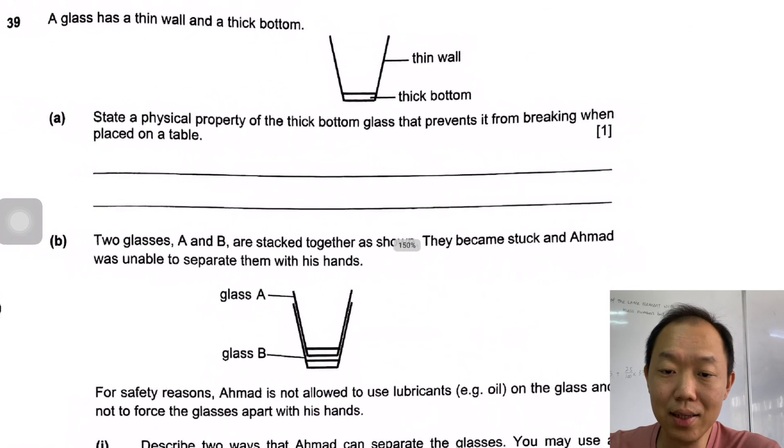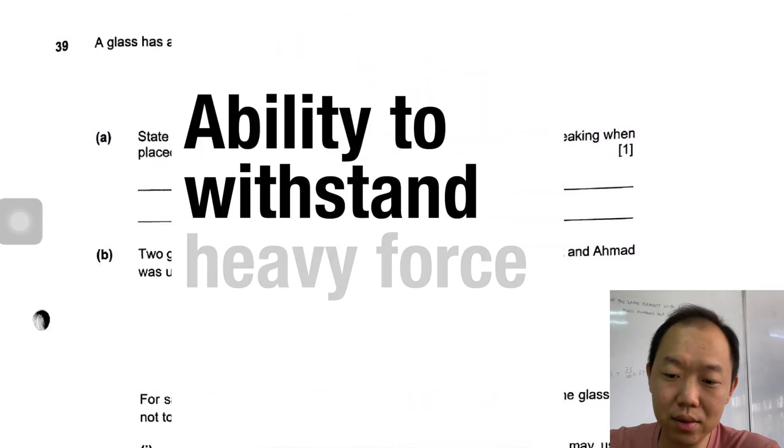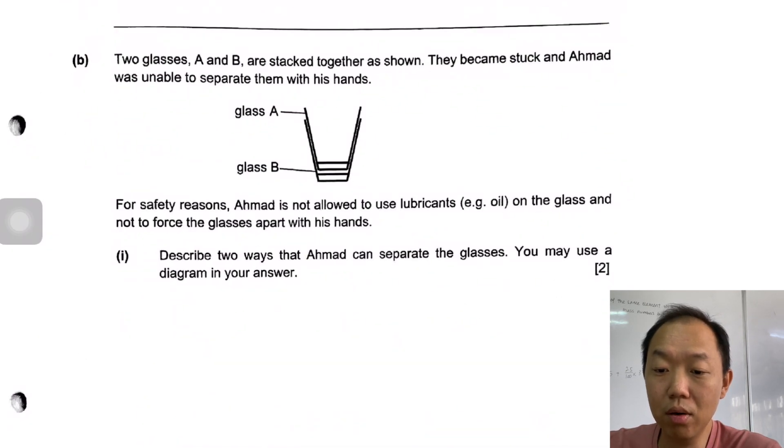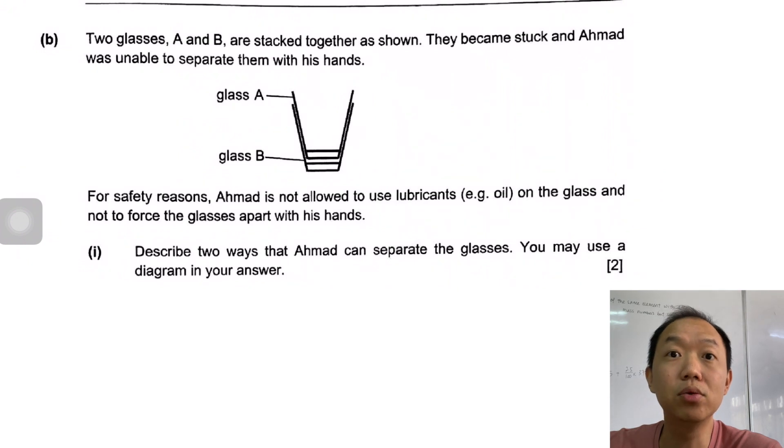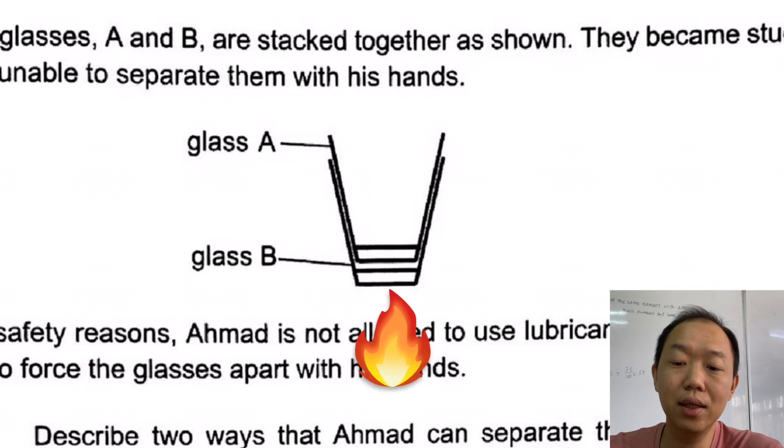Glass has a thin wall and a thick bottom. What is the physical property of the thick bottom glass when it is breaking? If something does not break, that means it is strong - so it has strength. Now we want to remove glass A from glass B. What we do is very simple: you can either put ice inside here, or you heat the bottom. Why do you put ice here? Because when you put ice into A, A will contract, become smaller. B will remain the same size, and then you can pull it out. Or you can heat glass B. When you heat glass B, B becomes bigger, and then when it becomes bigger, you can take B out.